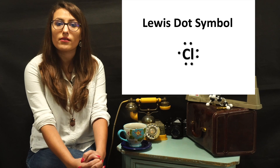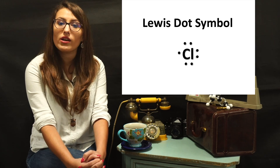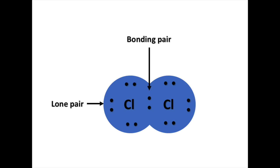We have discussed covalent bonds, which occur when non-metals share electrons. We will use Lewis dot structures to describe covalent bonding. Let's take, for example, chlorine. It has seven valence electrons and needs only one electron to form an octet. If two chlorine atoms form a covalent bond by sharing the unpaired electrons, they each obtain an octet, as seen in the following diagram. The electrons that are shared amongst the chlorines are referred to as bonding pairs, and the unpaired electrons are known as lone pairs. Lone pairs do not participate in the formation of a covalent bond.